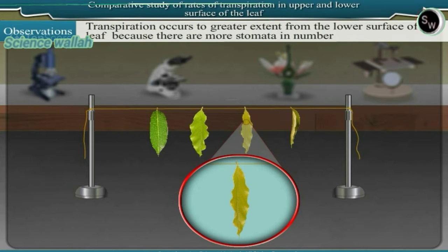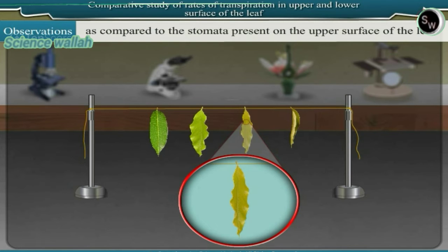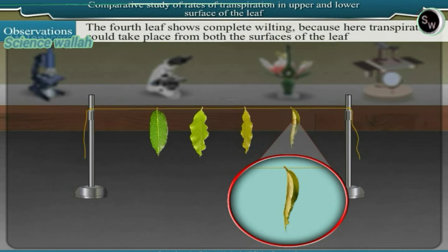Transpiration occurs to greater extent from the lower surface of the leaf because there are more stomata in number as compared to the stomata present on the upper surface of the leaf. The fourth leaf shows complete wilting because here transpiration could take place from both of the surfaces of the leaf.